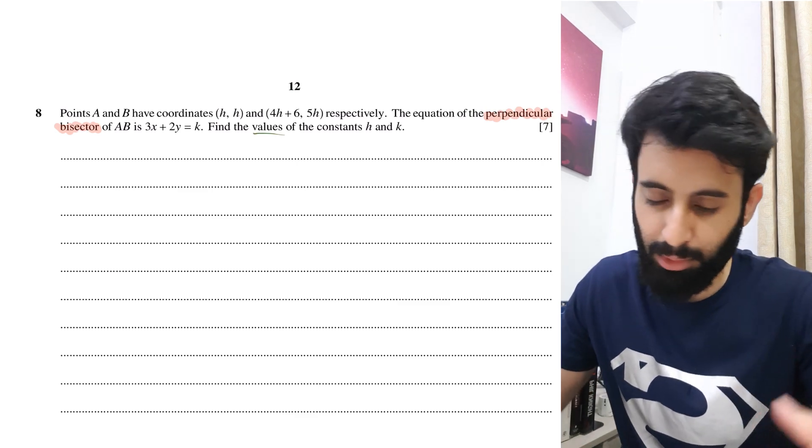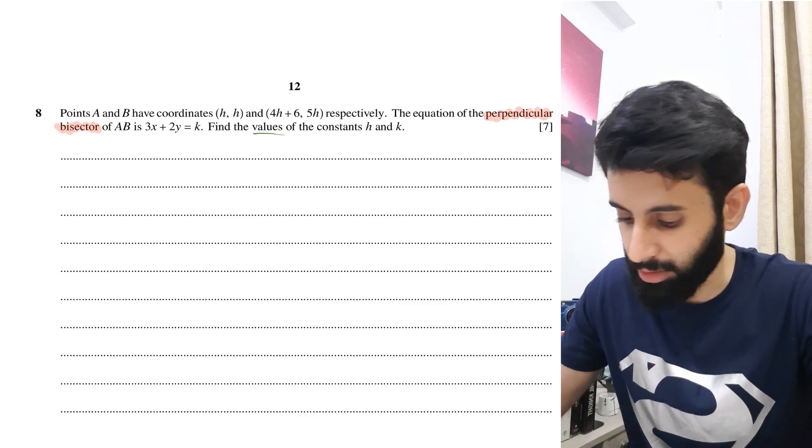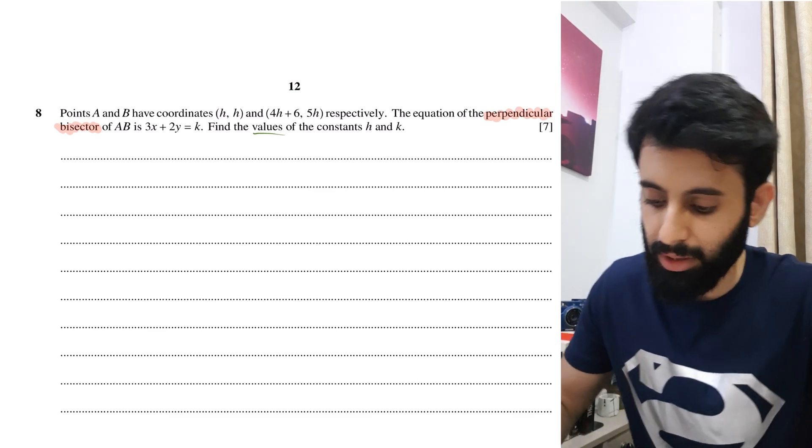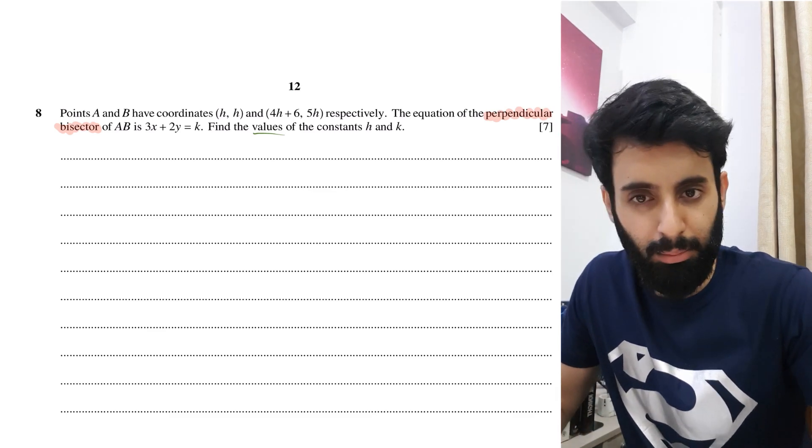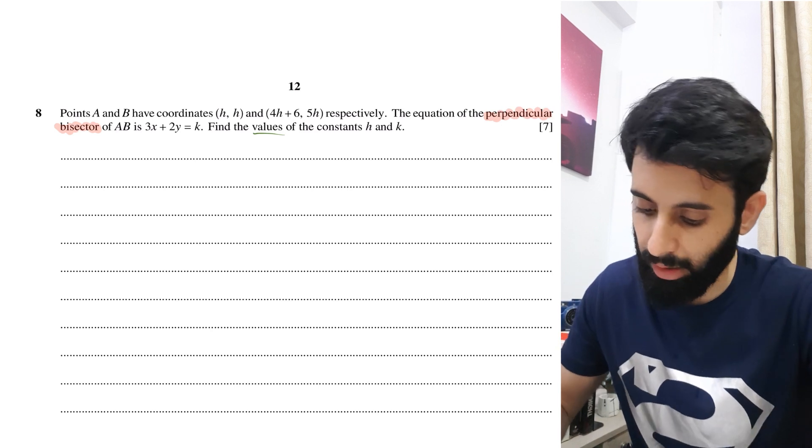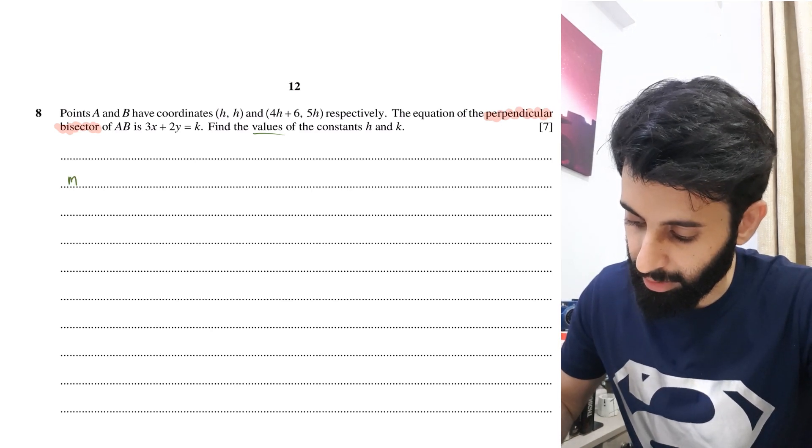So, notice how it says values, that means we're likely to end up with more than one answer. Anyway, let's dive straight into it. We're going to find the equation of the perpendicular bisector of AB the way that we normally do, and the first thing we're going to do is find out the gradient of AB.